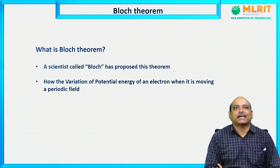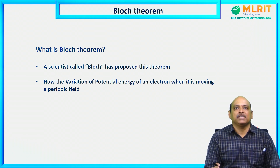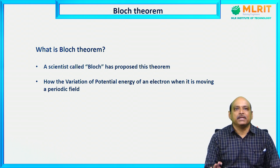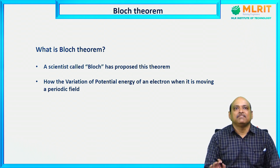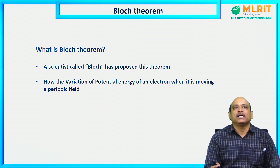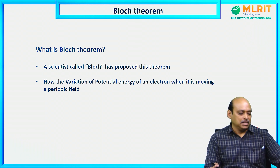Bloch is nothing but a scientist. A scientist called Bloch proposed that when an electron is moving in a periodic field, how the potential energy is varying. Whatever proposal he made, we are calling it as Bloch Theorem. He explained how the potential energy of an electron varies with respect to its position when it is moving in a periodic field.